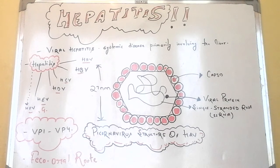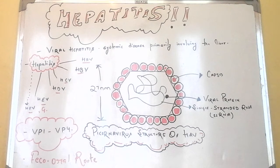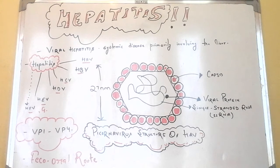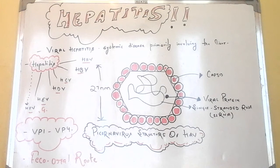Regarding immunization, there is only one serotype of HAV and HAV infects only humans — factors that help ensure the success of an immunization program. Natural infection with HAV, whether clinical or subclinical, leads to lifelong immunity. There is no cross immunity between HAV and any other of the hepatitis viruses.